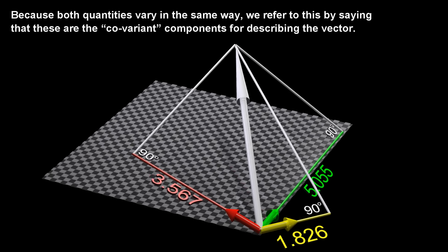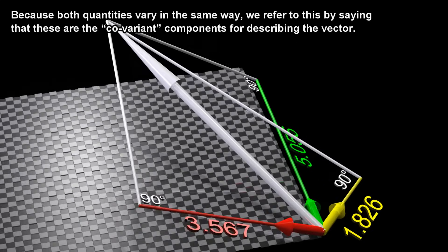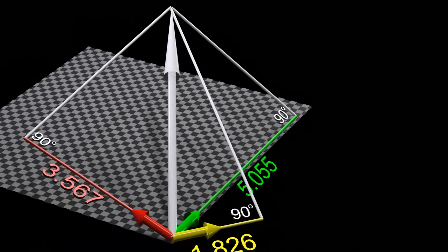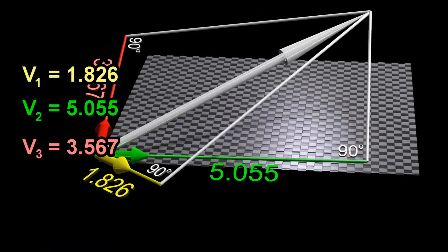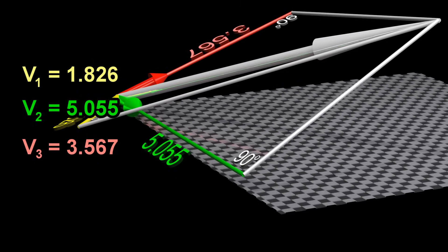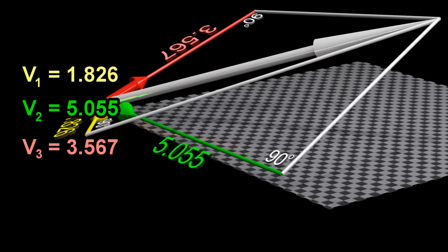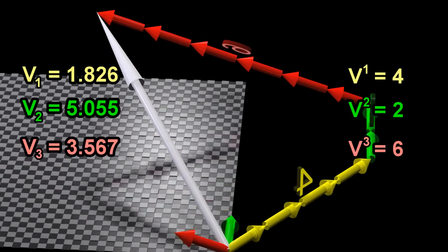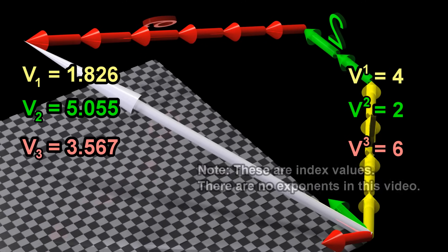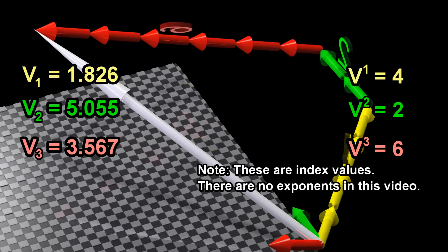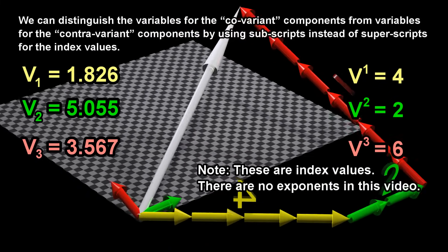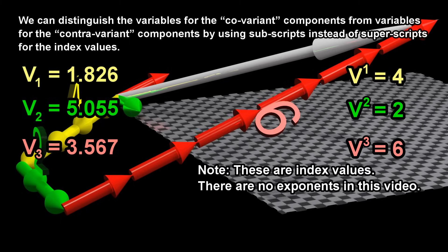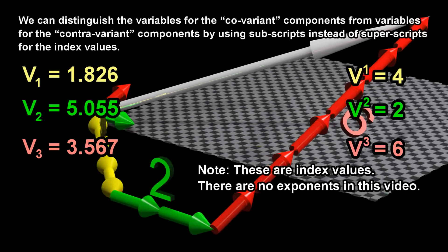Because both quantities vary in the same way, we refer to this by saying that these are the covariant components for describing the vector. We can distinguish the variables for the covariant components from variables for the contravariant components by using subscripts instead of superscripts for the index values.